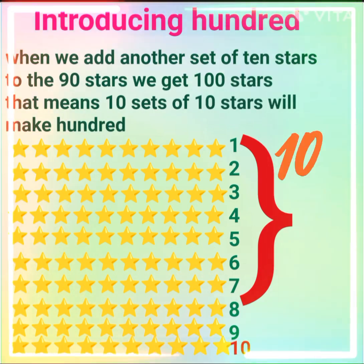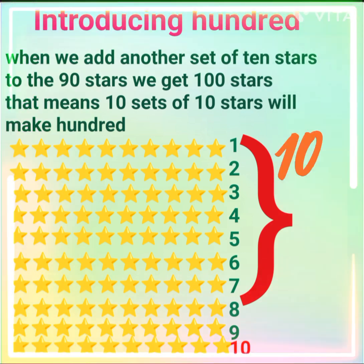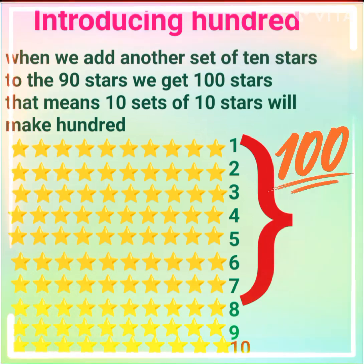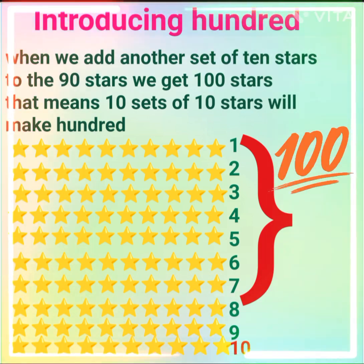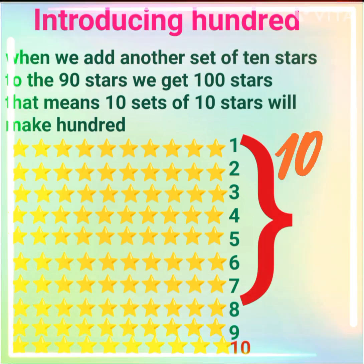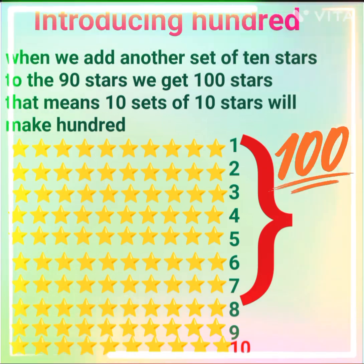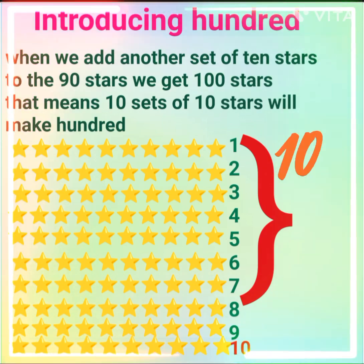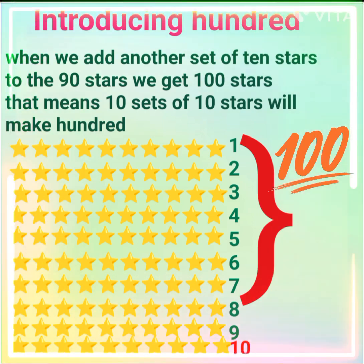When we add another set of 10 stars to the 90 stars, we get 100 stars. That means 10 sets of 10 stars will make 100.